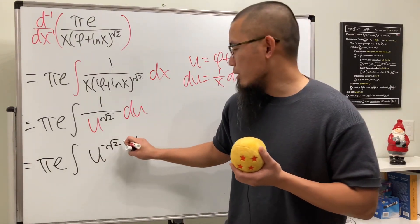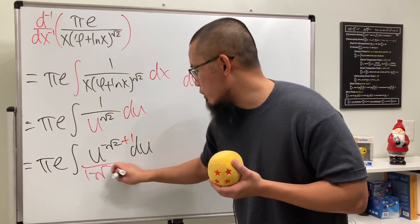And then we can just go ahead and add 1 to the power and then divide it by the new power. So I'll put down 1 minus square root of 2 right here for you guys.